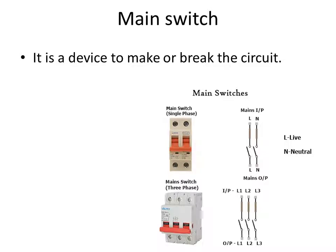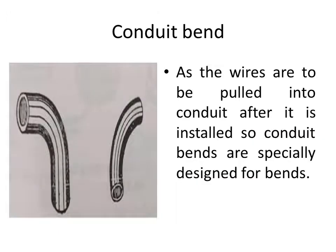The main switch is used to make or break the circuit of the whole installation. In conduit wiring, wires are laid through conduits after installing them. Conduit bends are required so that wires can be easily pulled through the conduits at bends.